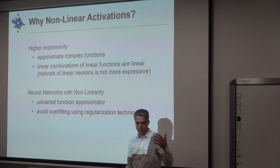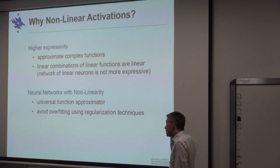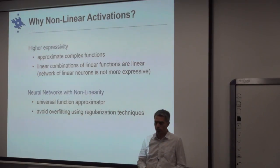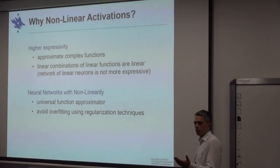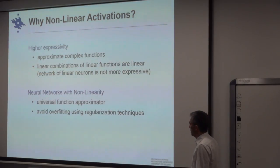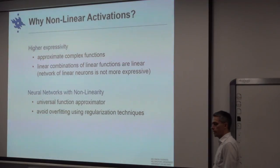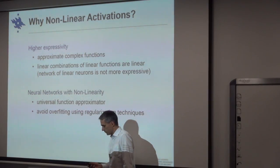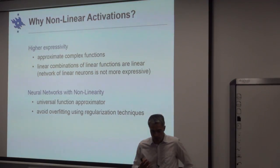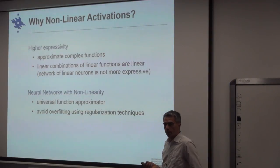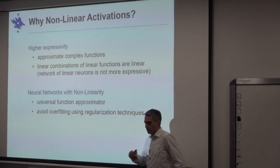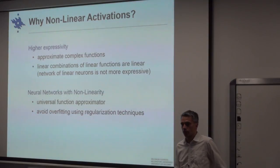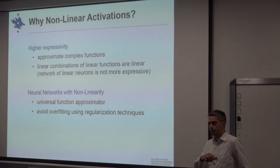One risk: with very high model capacity you can overfit very easily, finding overly complex decision boundaries that fit the training data too well. This definitely happens with neural networks, which is why many regularization techniques must be used — for example adding noise or other ways of regularizing the learning function to handle overfitting.